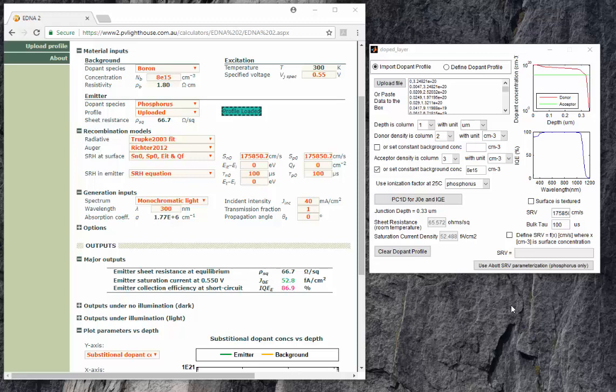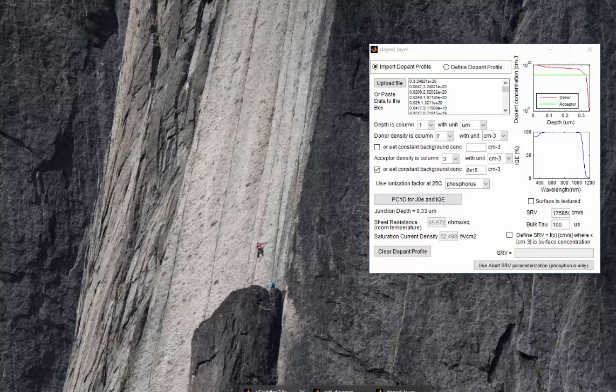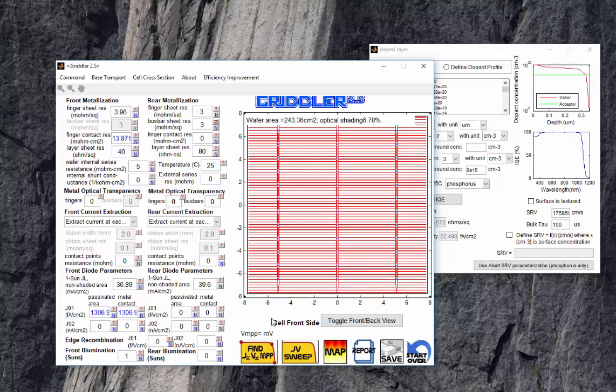Of course, we can try other phosphorus profiles and insert other SRVs. So for this video, what I have here is 45 different phosphorus profiles, and what I'm going to do in Gridler is I'm going to simulate each of these phosphorus diffusion profiles,